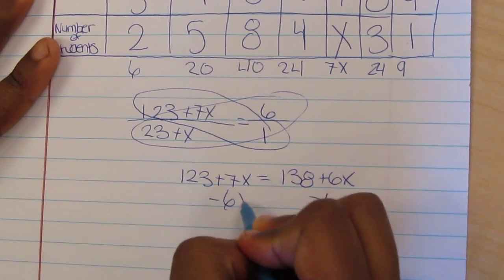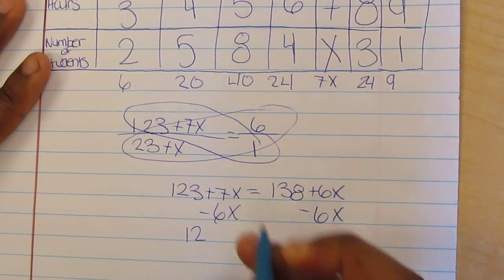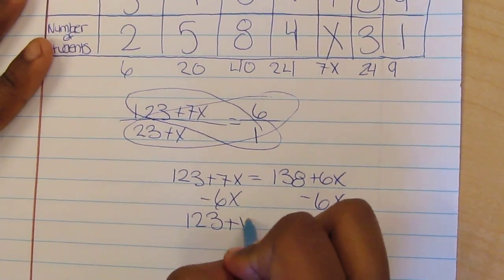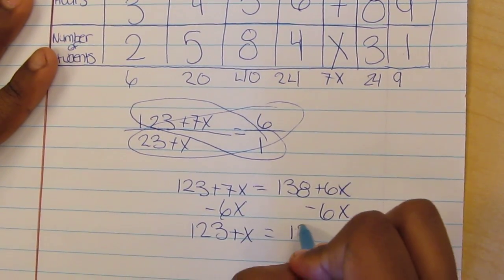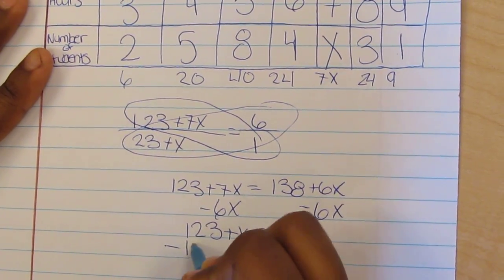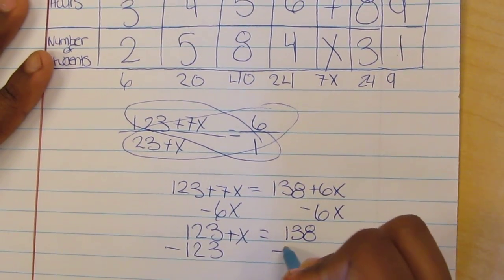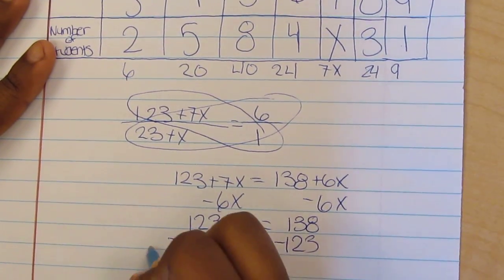That leaves you with 123 plus X equals 138. You subtract 123 from both sides.